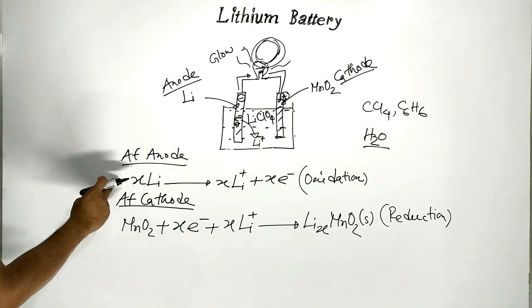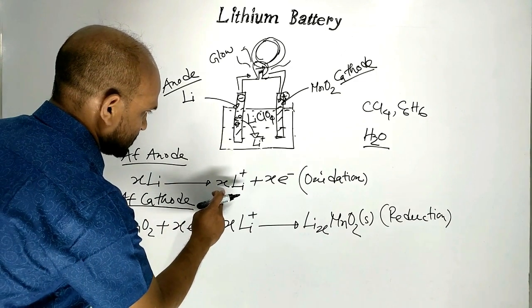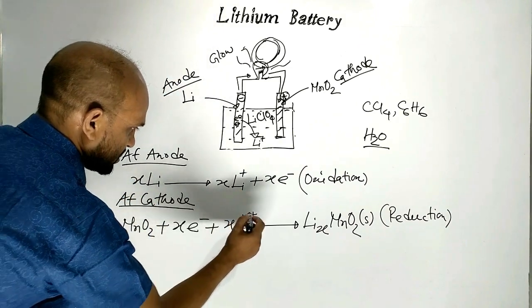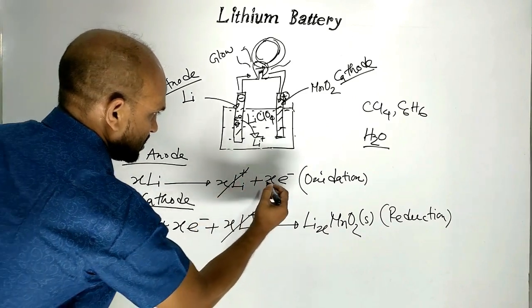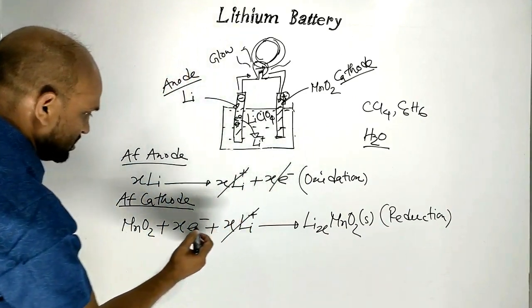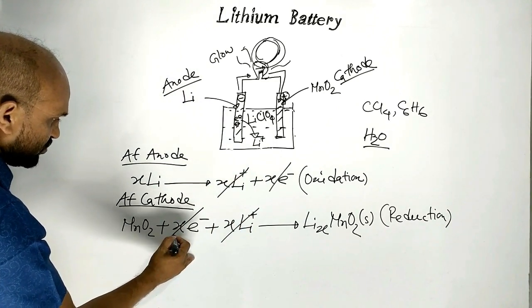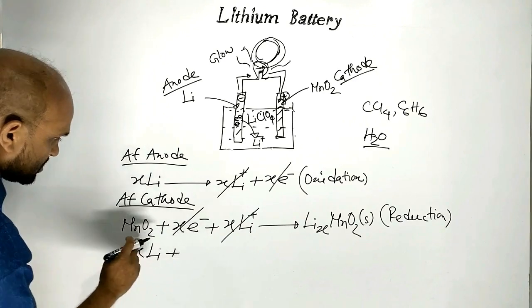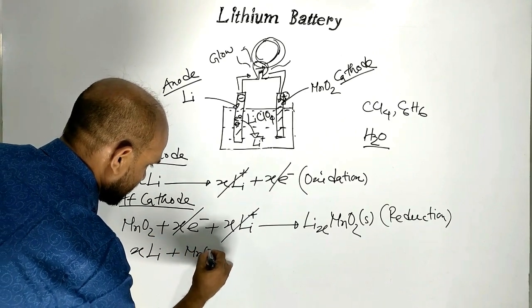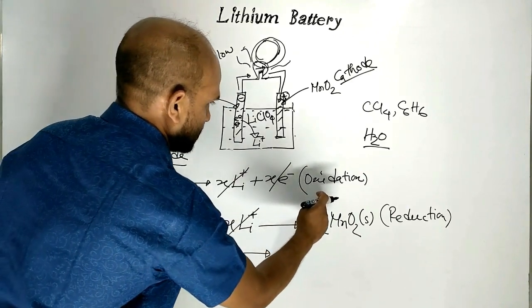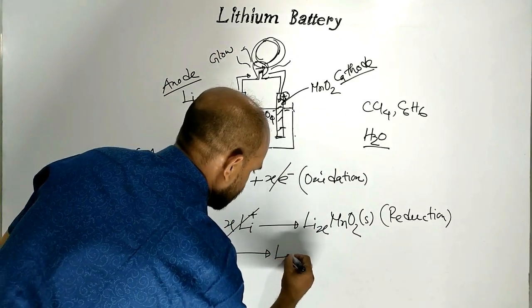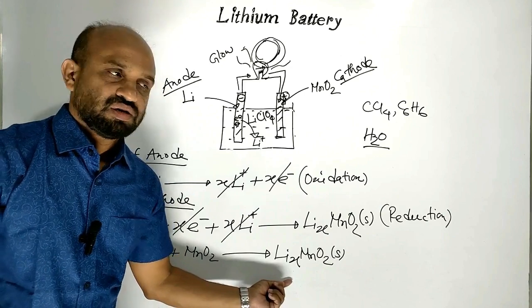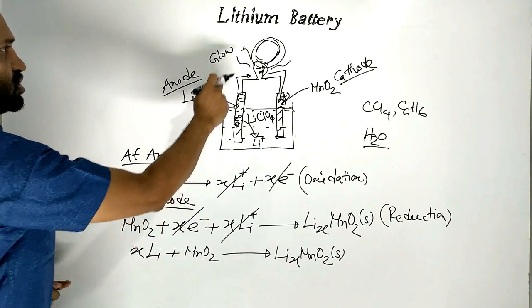Now let us see the overall reaction. X number of lithium ions and X number of electrons on both sides cancel out. Finally, we can write: X lithium atoms plus manganese dioxide gives lithium manganese oxide. In this way, the lithium battery produces electricity.